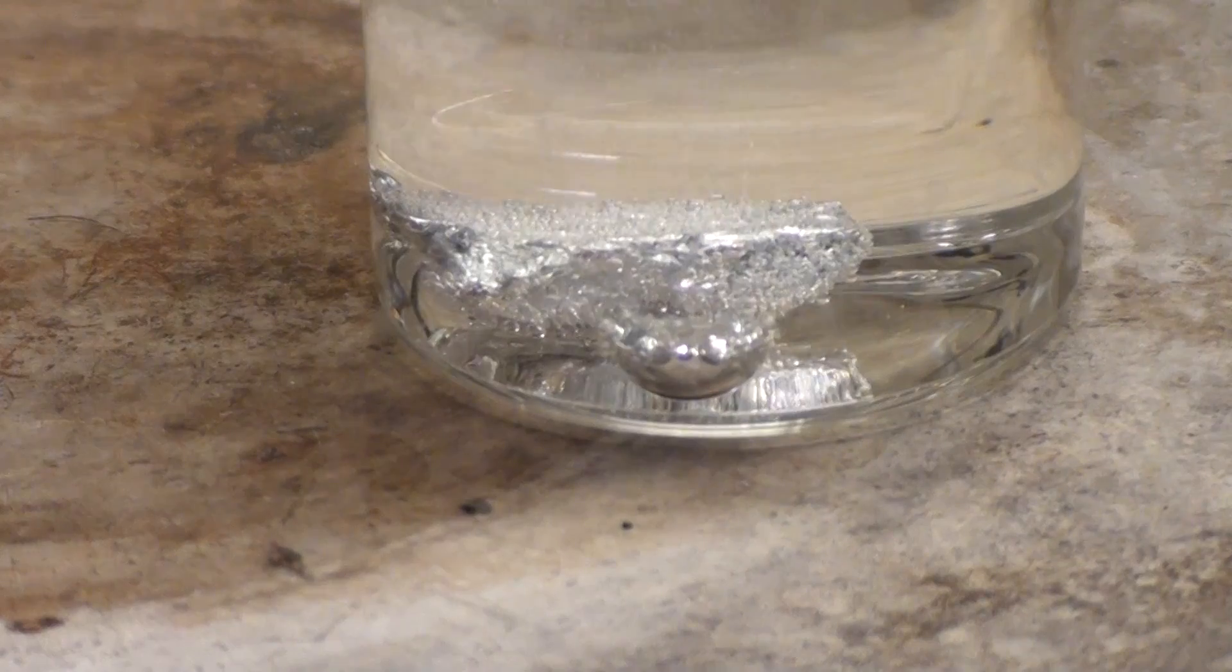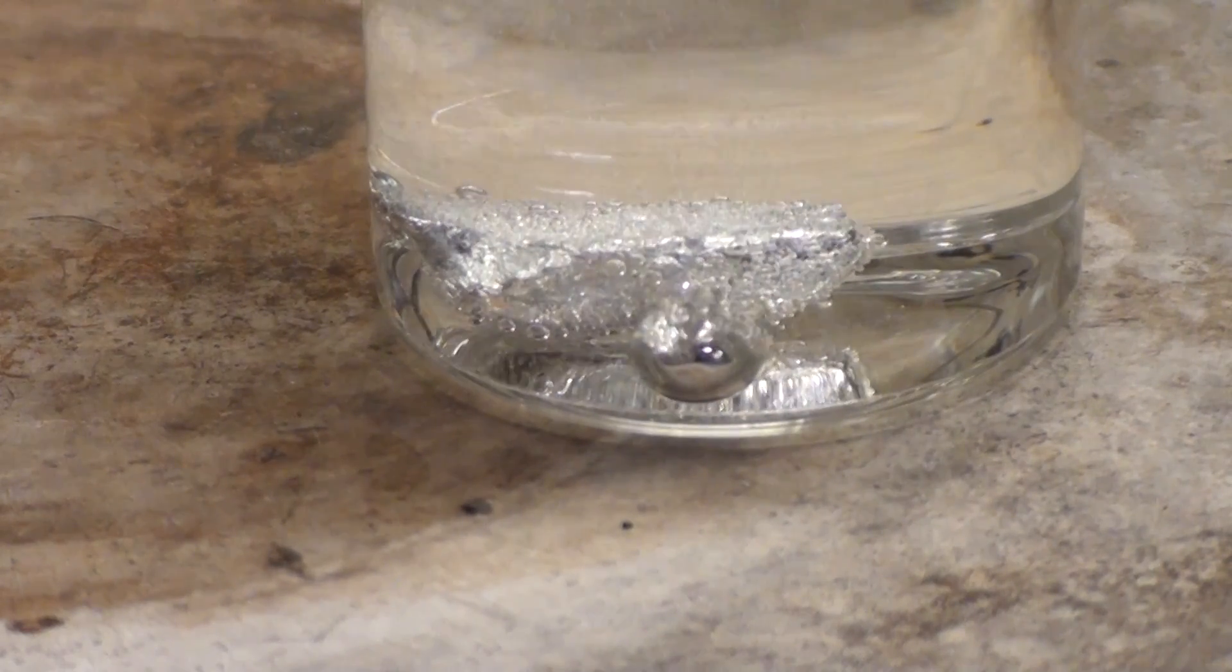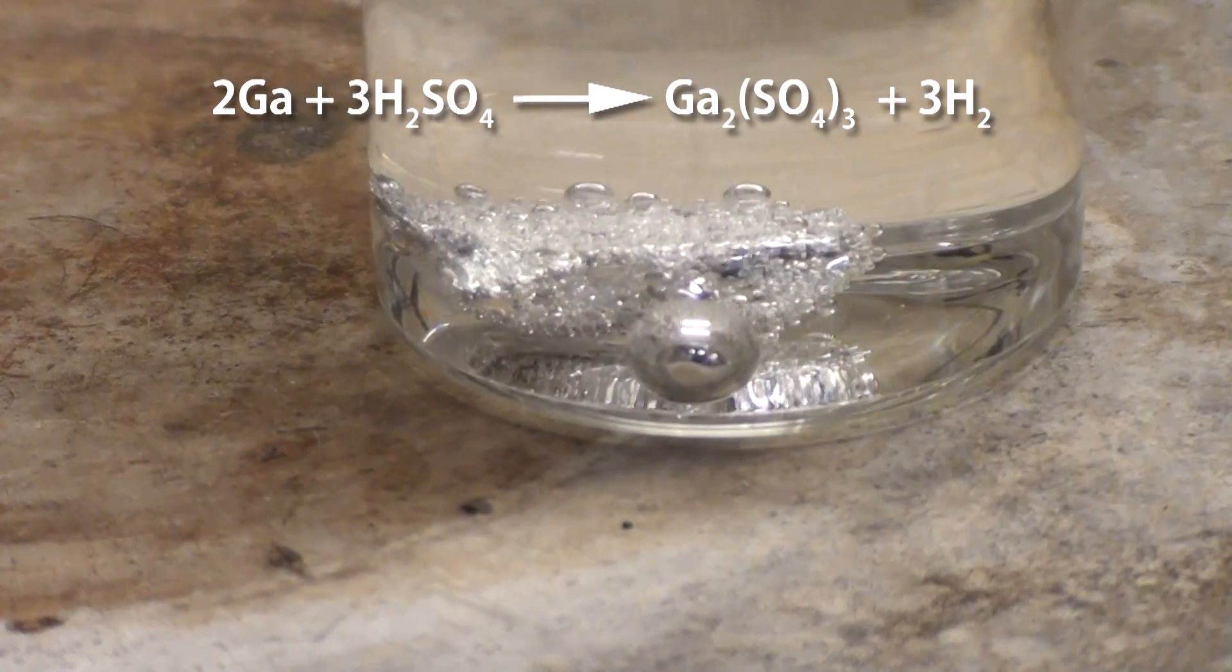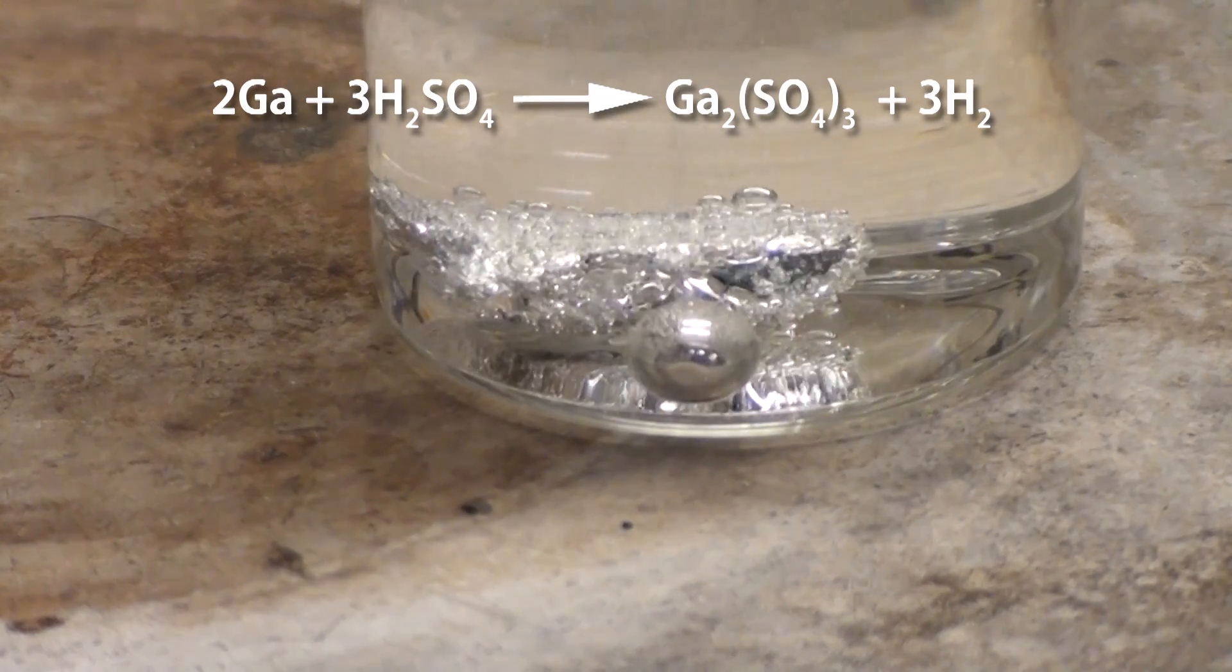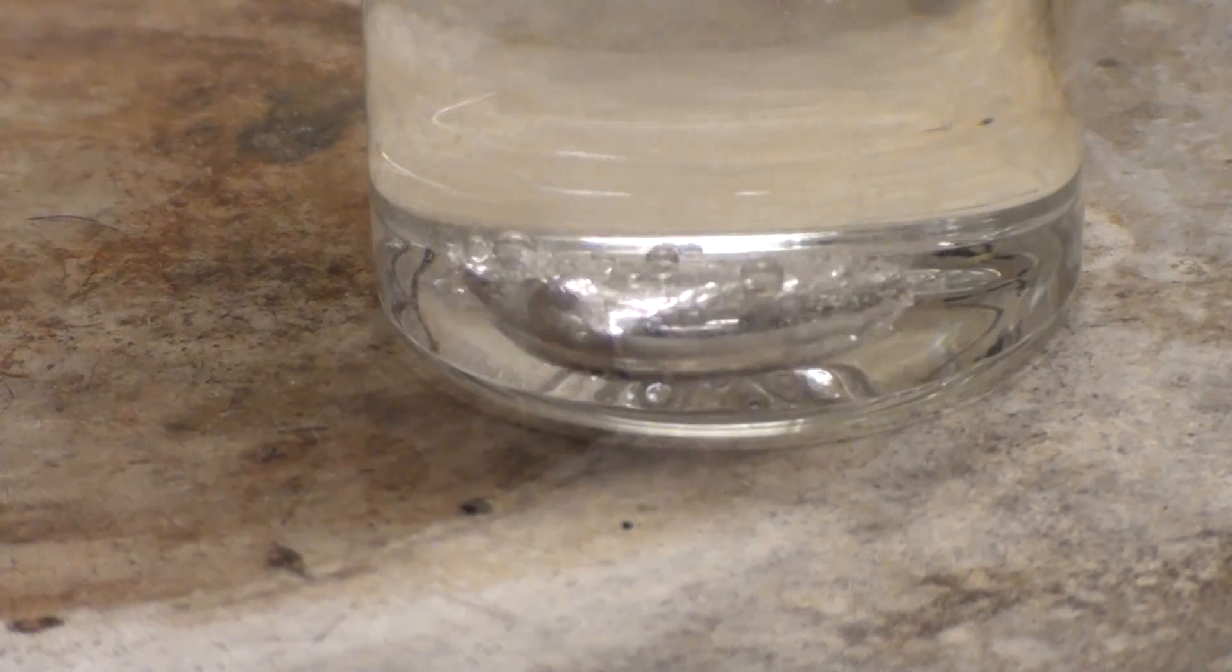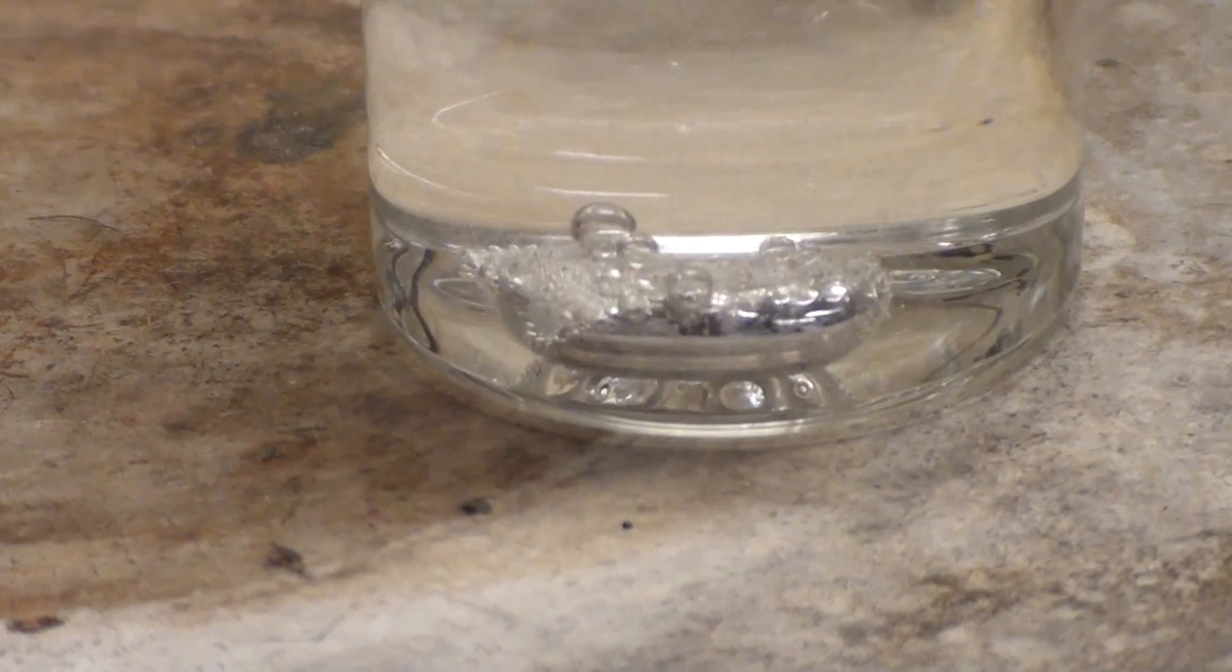Now as it heats the gallium will melt and liquefy. The sulfuric acid reacts with the gallium to form a very thin layer of gallium sulfate. This sticks to the surface and increases the surface tension of the gallium, causing it to pull itself together into a sphere. The bubbles you're seeing are actually bubbles of hydrogen as the gallium reacts.